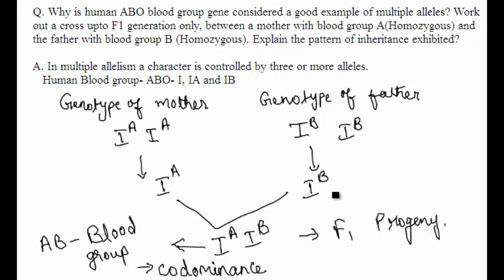The gametes IA and IB combine together to form IA IB in the F1 progeny. This IA IB genotype gives the AB blood group. So the blood group of the child will be AB.